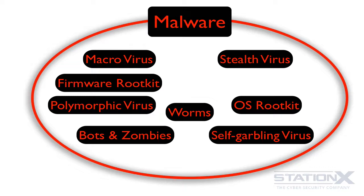Then you have firmware rootkits — these are the worst of all. For example, within your hard drive's firmware chip you could have some sort of malware, and even formatting your drive and reinstalling the operating system won't remove it. This is NSA or GCHQ level malware, but there have been papers published on how this is done, so it is likely that hacking groups are actually doing this.